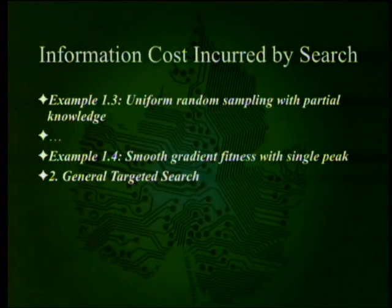Example 1.4 is smooth gradient fitness with single peak — and that is the model that most evolutionists like to believe that life exists on. There's a gradual increase in fitness where every single mutation makes it a little better. That makes it easy to search: you go around the area you're in, take the best one, and keep repeating.